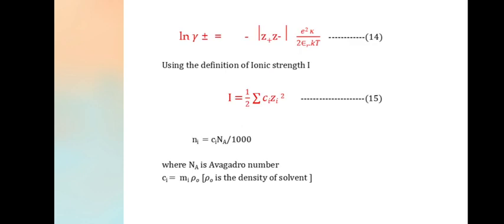ln(γ±) = -(Z+Z-e²κ)/(2εRkT). Using the definition of ionic strength, I = ½·Σ(CiZi²).